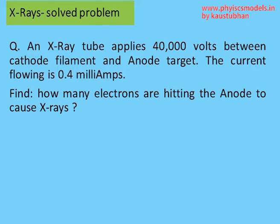This is a very simple problem, but it's worth looking at it. So we have the voltage across the cathode and the anode, and a current is flowing like a circuit. We have to find out how many electrons are flowing from the cathode to the anode and creating X-rays.